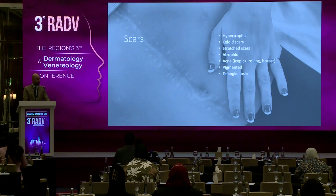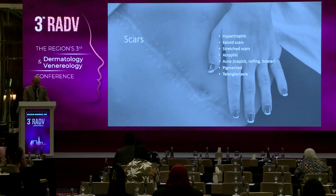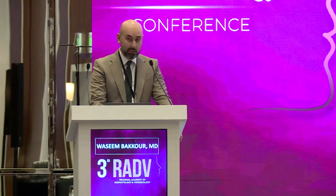There are different types of scars. We have hypertrophic scars, keloid scars, stretched scars — especially on highly mobile parts of the body like the shoulders — atrophic scars, and different types of acne scars. Scars can also have other issues that lead to color change, like pigmentation, redness, and telangiectasia.